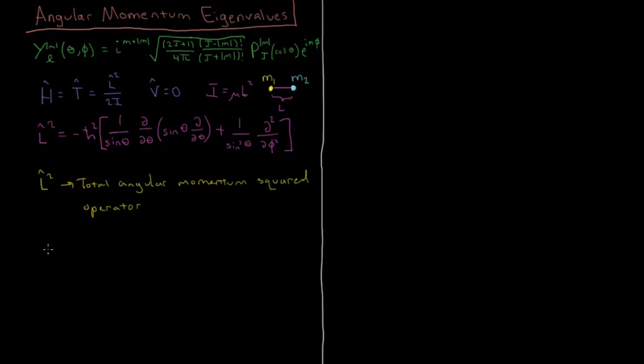This will tell us what the square of the total angular momentum of our wave function is. This can also be written, L squared, as a sum of the three directional components of angular momentum in the x, y, and z direction. Lx squared plus Ly squared plus Lz squared.